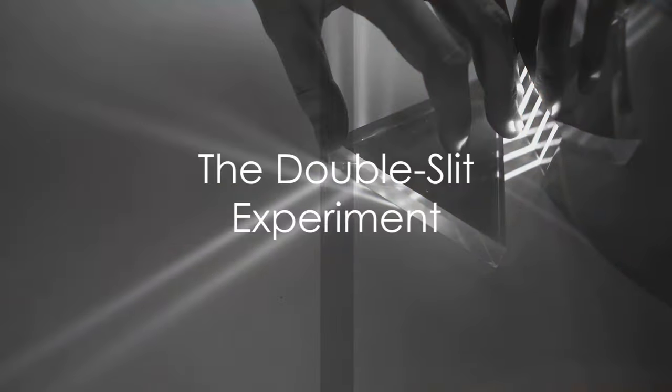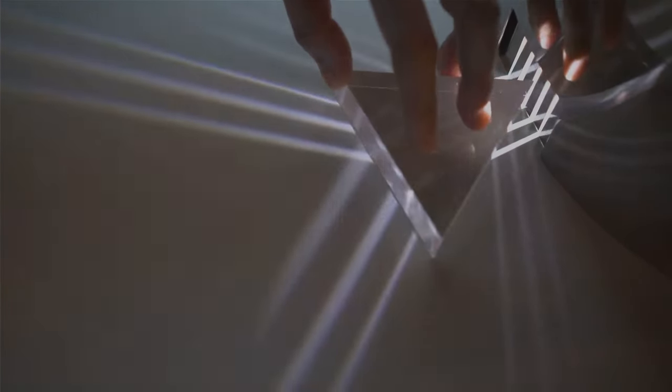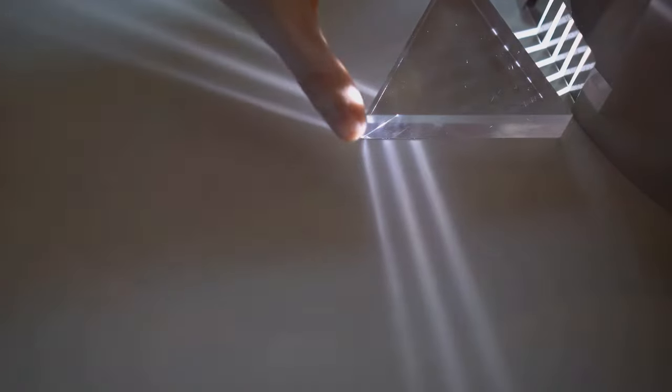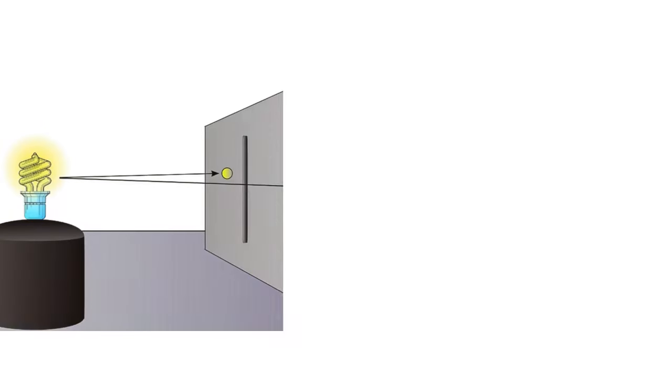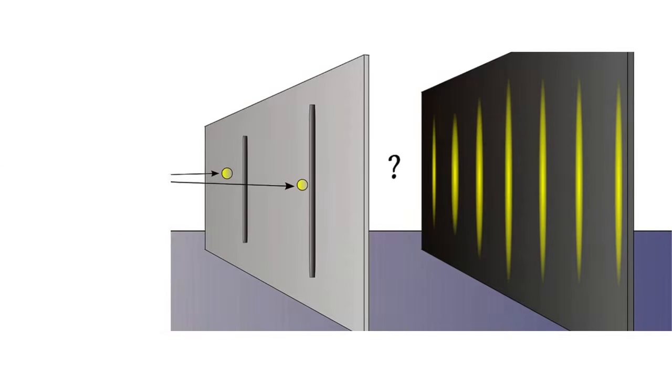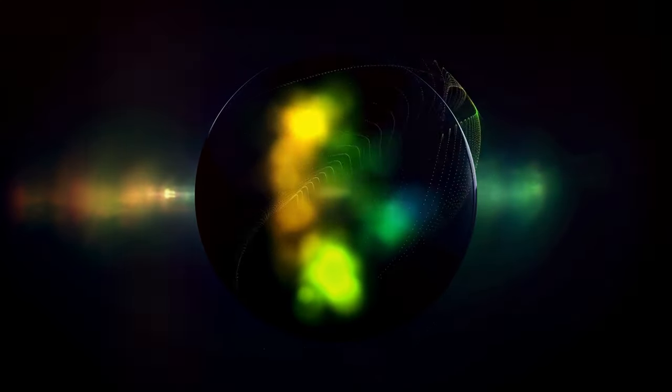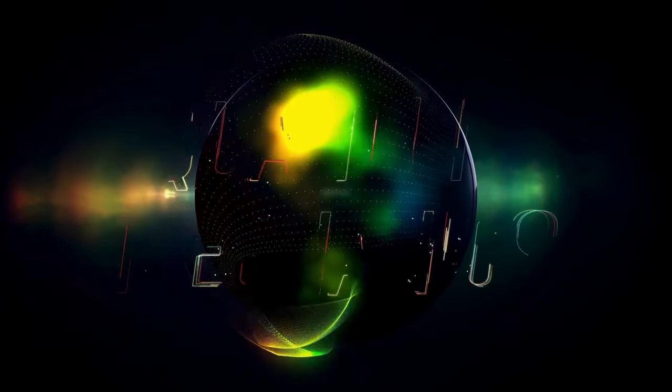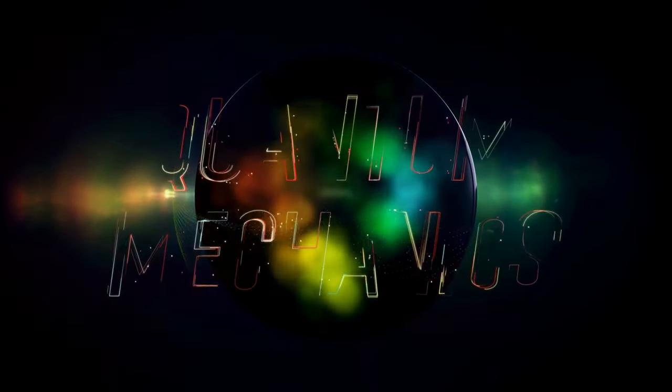Now, let's delve into the double-slit experiment, a seemingly plain setup involving light and two slits that led to one of the most shocking discoveries in the realm of physics. This experiment ushered in a new understanding that light and matter could bear traits of both particles and waves, a phenomenon that fundamentally shakes our comprehension of reality.